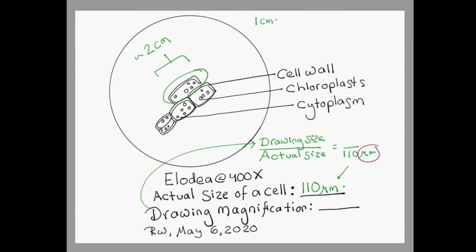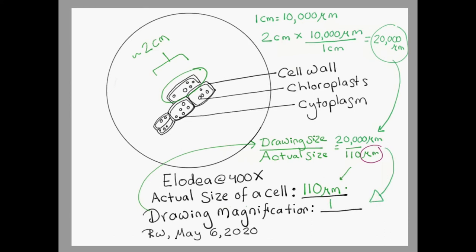There are 10,000 micrometers in 1 centimeter. So, we would multiply our cell size of 2 centimeters by the conversion factor to give a drawing size of 20,000 micrometers. Now we can plug this into our equation for drawing magnification. And, after calculating it, we get a final value for drawing magnification of 182 times. This means we've blown up the picture of the cell to 182 times of its actual size.